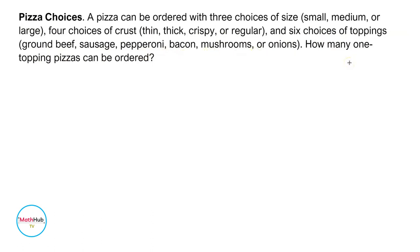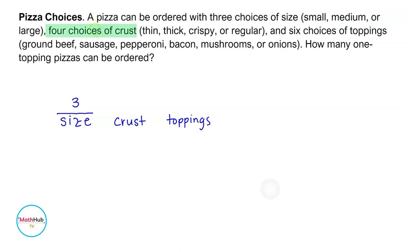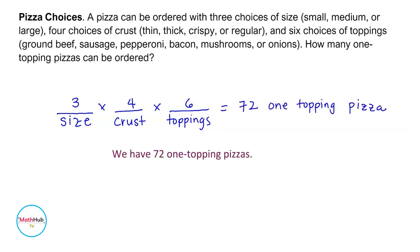How many one-topping pizzas can be ordered? This can be solved using the basic counting principle. We determine the size — three choices — the crust — four choices — and the toppings — six choices. To get the number of one-topping pizzas, multiply: three times four times six, which is equal to 72. Therefore, we have 72 one-topping pizzas.